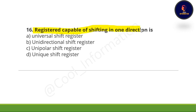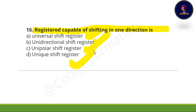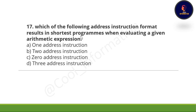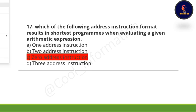Sixteenth question: A register capable of shifting in one direction is — option A, universal shift register; option B, unidirectional shift register; option C, unipolar shift register; option D, unique shift register. The correct option is option B, which is unidirectional shift register.